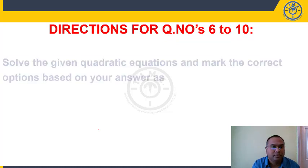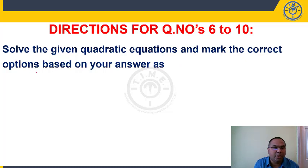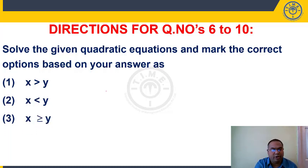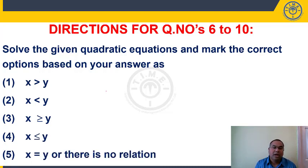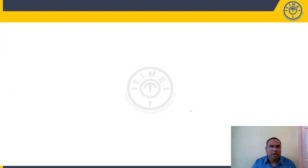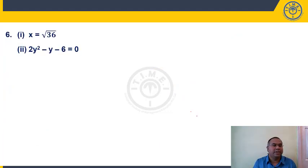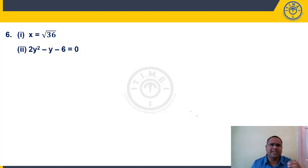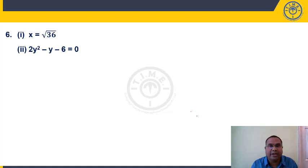Directions for questions 6 to 10: solve the given quadratic equations and mark the correct option — option 1 if x > y, option 2 if x < y, option 3 if x ≥ y, option 4 if x ≤ y, option 5 if x = y or no relationship can be established. Question 6: first equation x = √36, second equation 2y² − y − 6 = 0. Let us spend time here to understand how to find roots faster using multiplication tables.